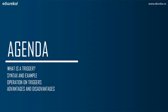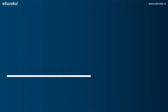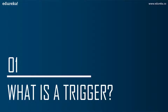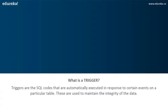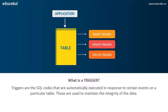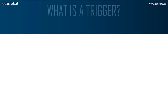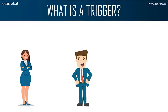Let's get started. The first topic in today's discussion is what are triggers. Triggers are SQL code that are automatically executed in response to certain events on a particular table. These are used to maintain the integrity of the data in a given table. A trigger in SQL works similar to a real-world trigger.